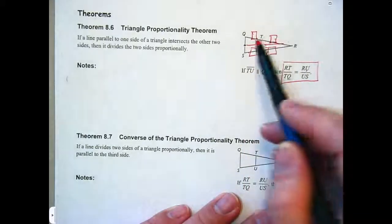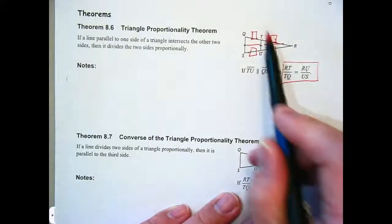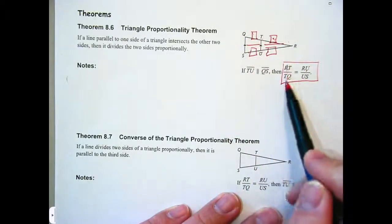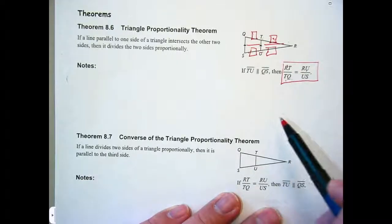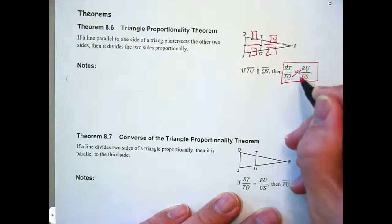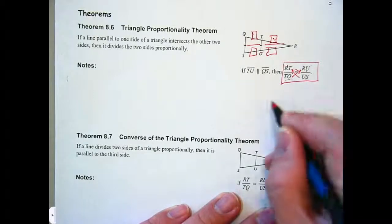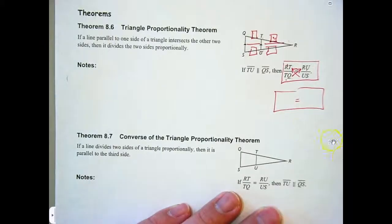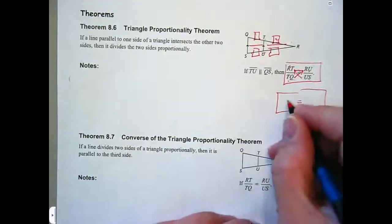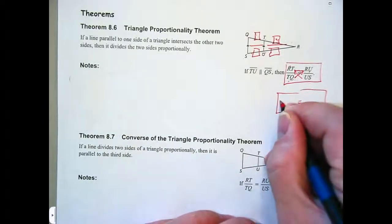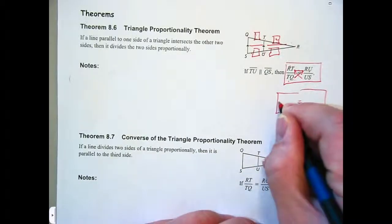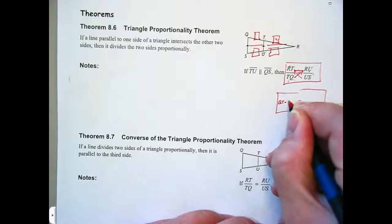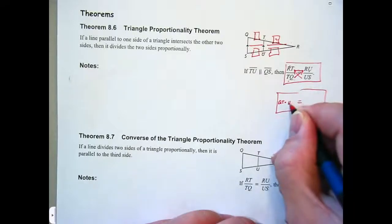Please note that this says RT is to TQ. It goes about it in a different way. But if you cross multiply, I want everyone to cross multiply that and get your equation right there, on your own paper right now. What do we get? QT UR.